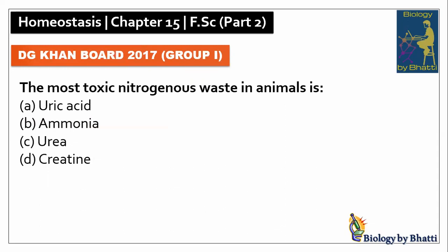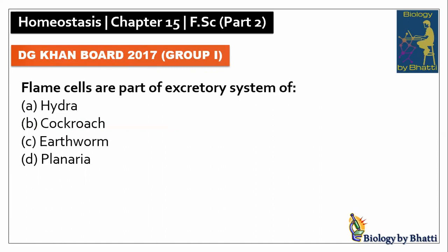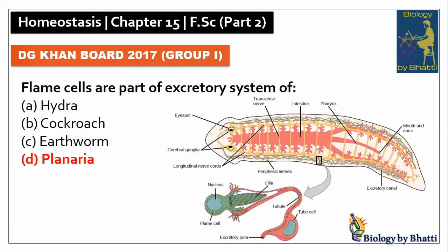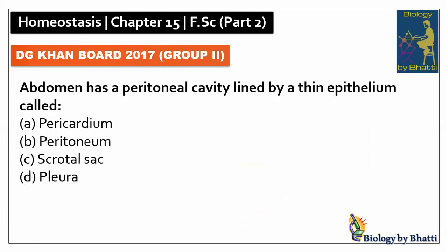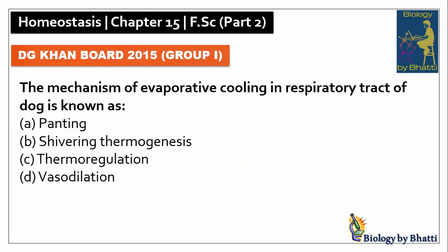The most toxic nitrogenous waste in animals is ammonia, the answer is B option. Flame cells are part of the excretory system of planarians, the answer is D option. DG Khan Board 2017 Group 2: a pair of kidneys consists of millions of functional units called nephrons, the answer is A option. In the same paper, the abdomen has a peritoneal cavity lined by a thin epithelium called peritoneum, the answer was B option.